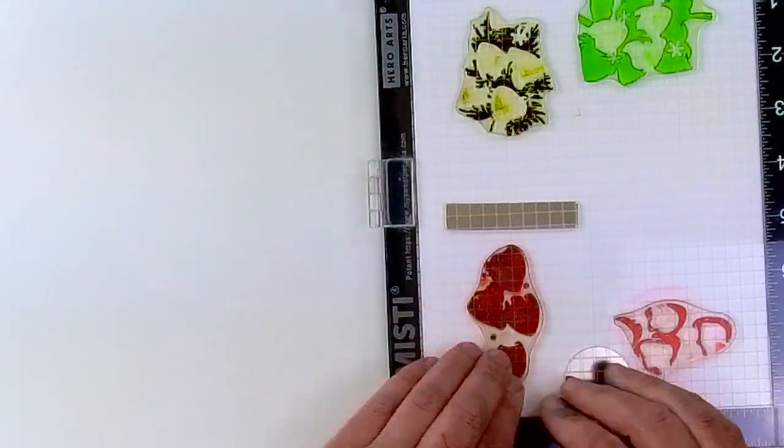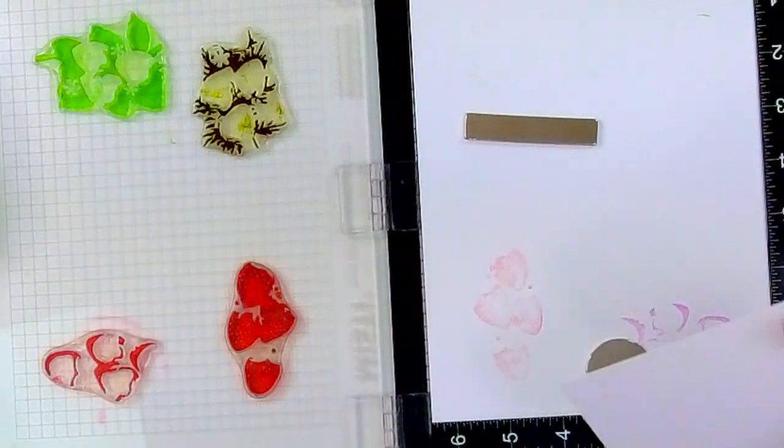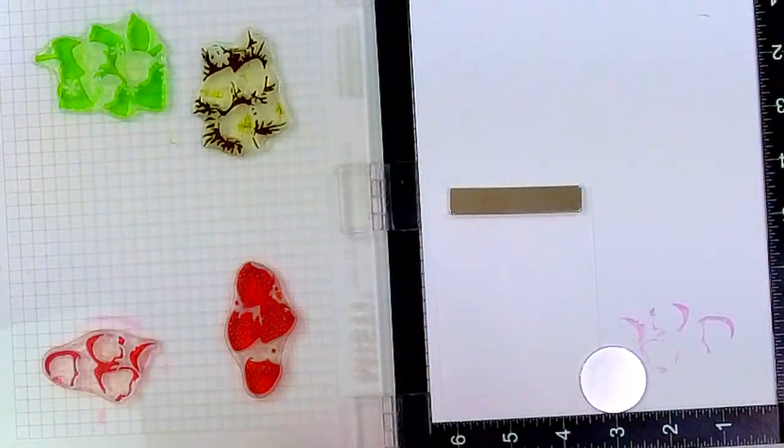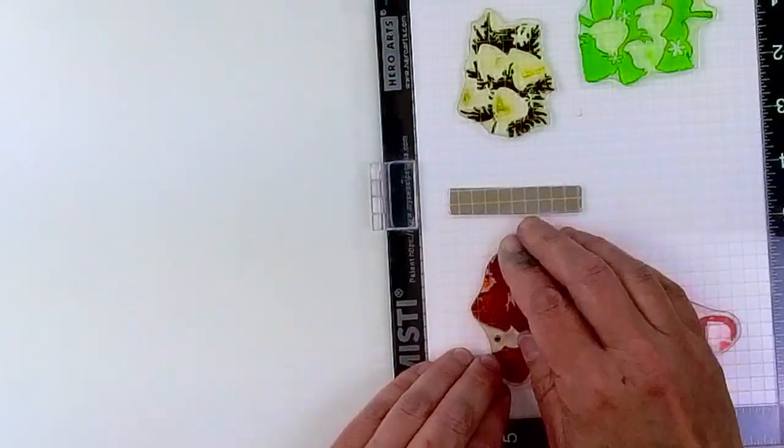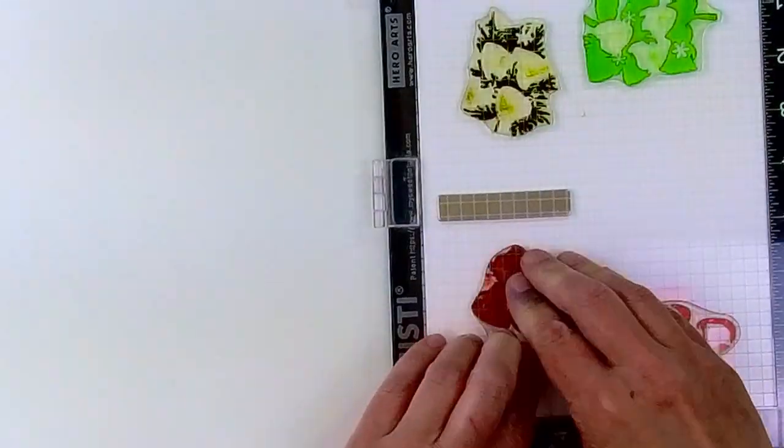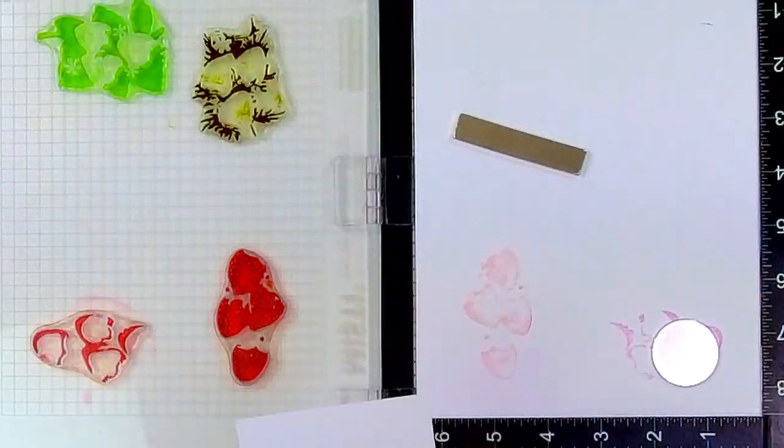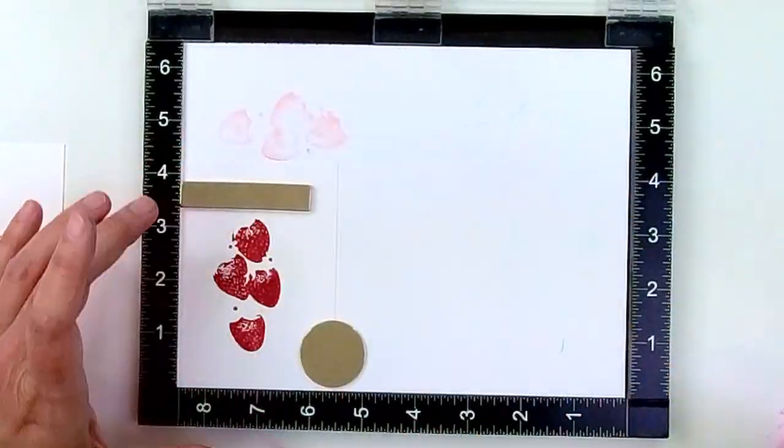Now notice that I left my stamps in place. This is going to make it possible for me to stamp as many sets of strawberries as I want very easily. So here I am stamping it a first, second, and third time, and now I have three strawberry bases.